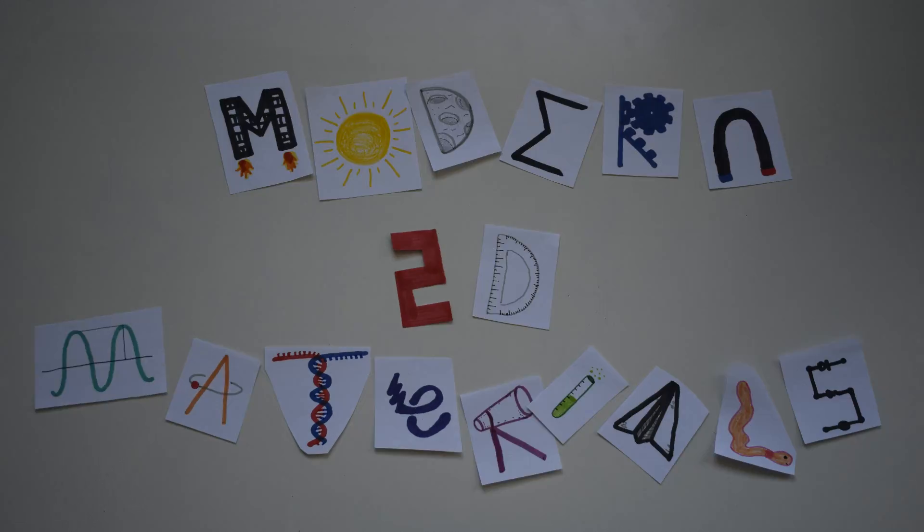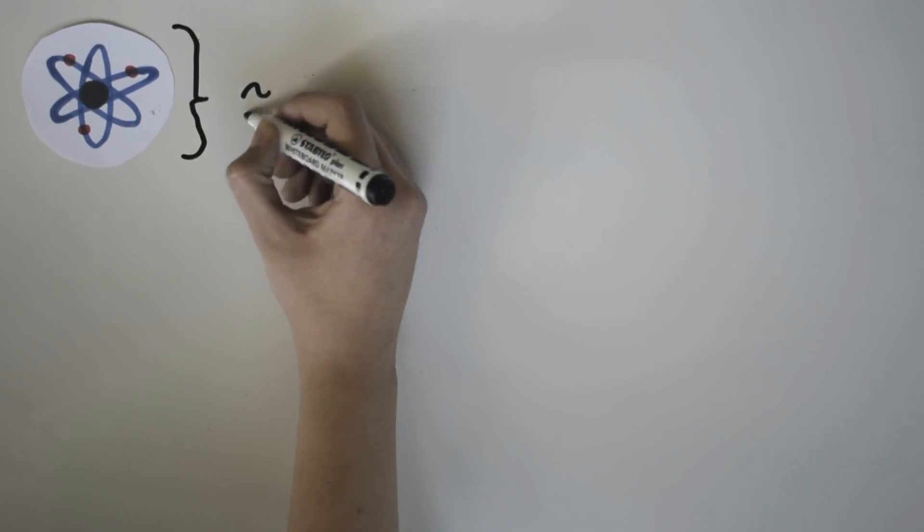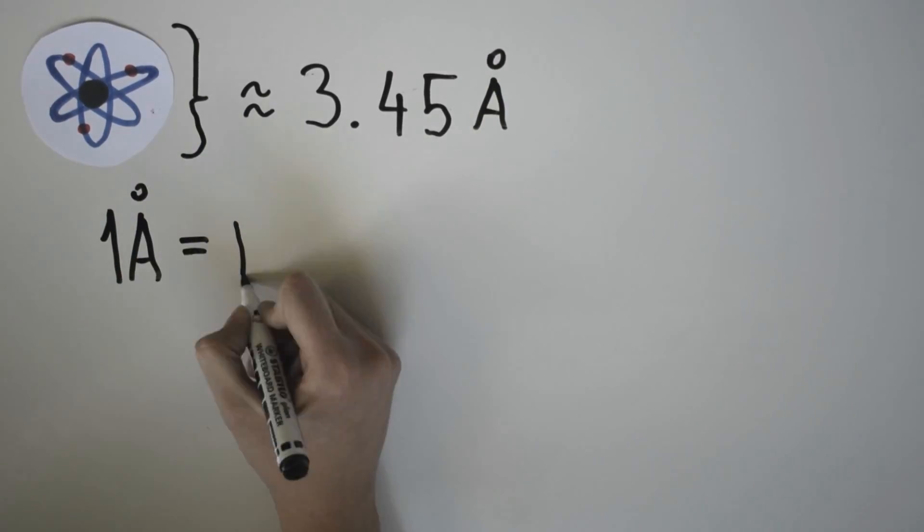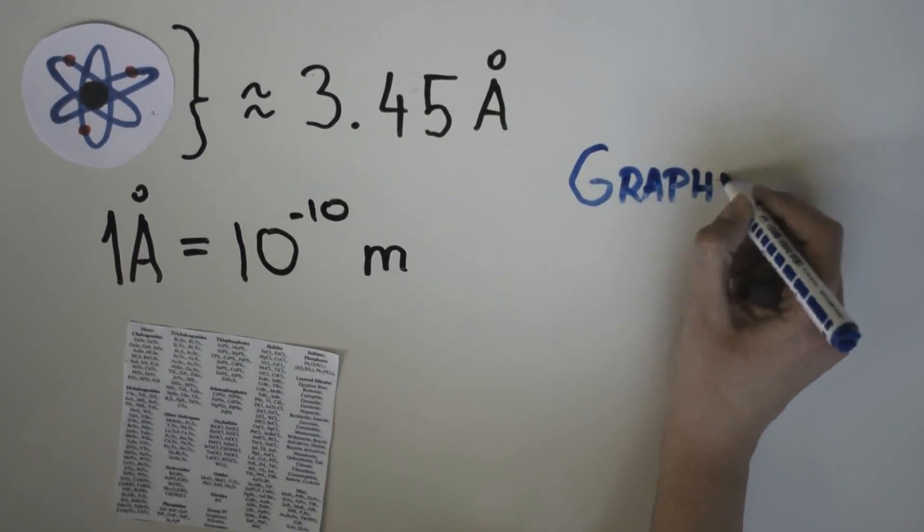Two-dimensional materials are crystalline substances with a thickness of a few atoms or less. There are a lot of them, and the most famous 2D material is graphene.